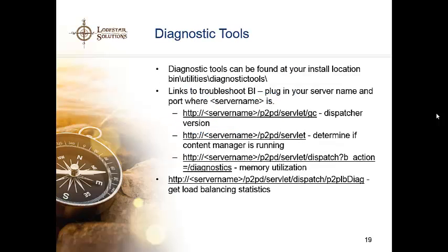There are also some diagnostic tools available that you may or may not know about. You can find those in your install location — go to the bin folder, then the utilities folder within that, and then the diagnostic tools folder. In there you can run diagnostics on a number of things: you can do a system overview, pull up info on your content store, info about Framework Manager, or for those of you who have Planning, there's also some planning diagnostics in there. These are little executables that you can run that will give you some good diagnostic information that you can use with the auditing information.